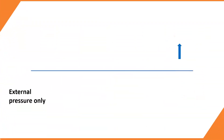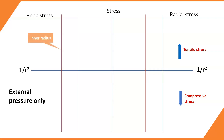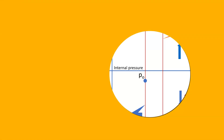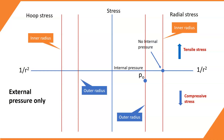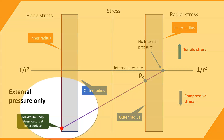Now we look at the graphical representation of stresses when the cylinder carries only an external pressure. The pressure acting on the external surface is taken as a compressive stress, while the pressure acting on the inner surface is taken as zero. Drawing a straight line joining these two points and extending it to the hoop stress side, we can determine the radial and hoop stresses within the region between the inner and outer radii. The maximum stress occurs at the inner surface of the cylinder, which is a compressive hoop stress.